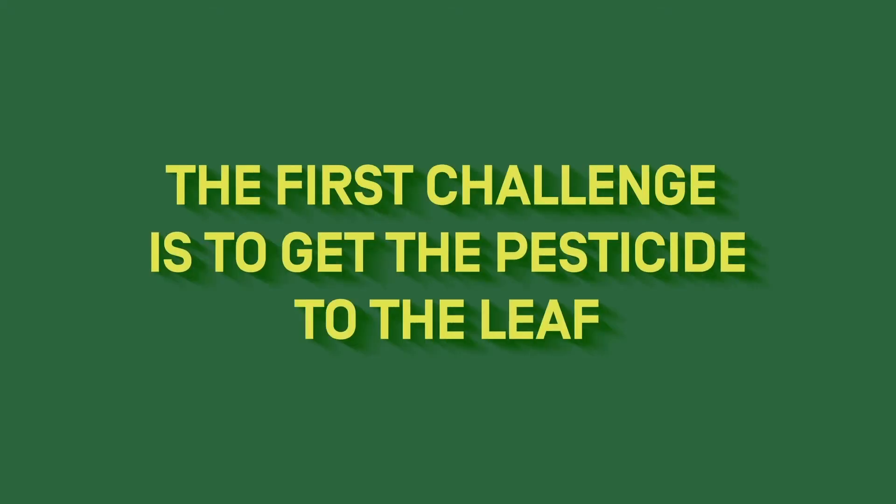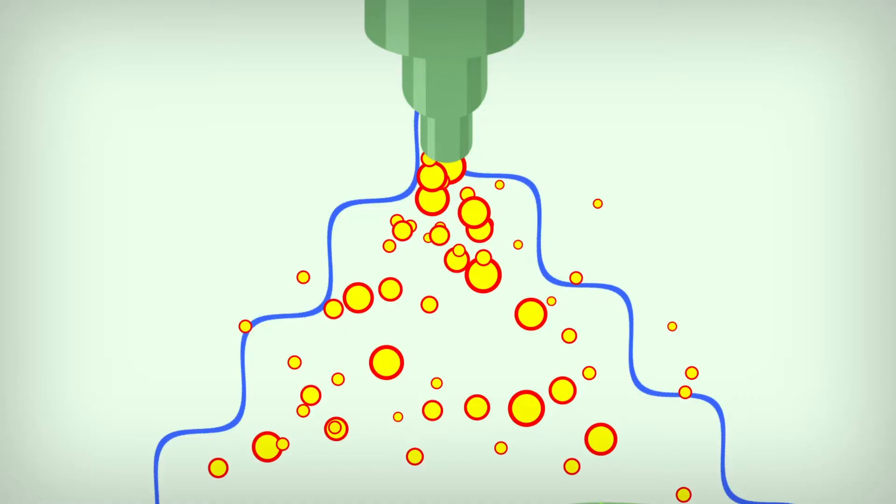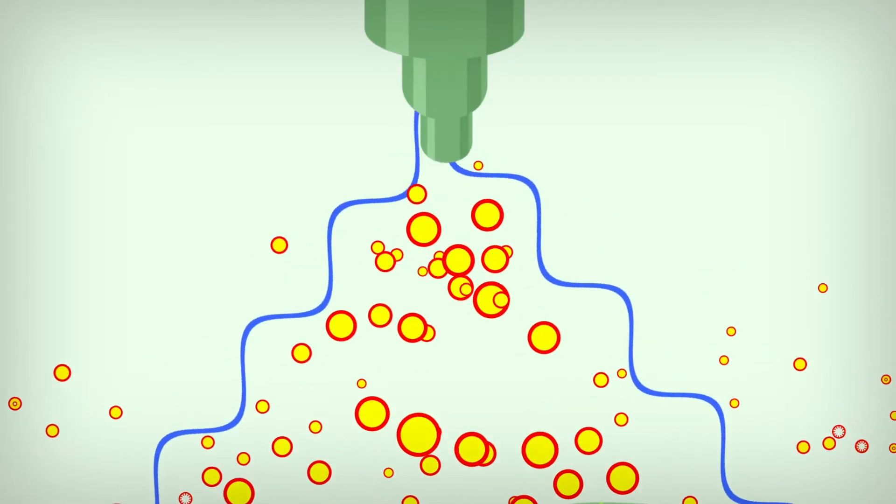The first challenge is to get the pesticide to the leaf. Pesticide sprays have a wide range of droplet sizes.